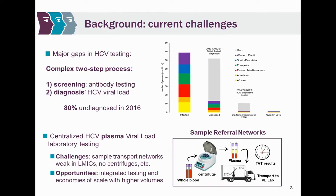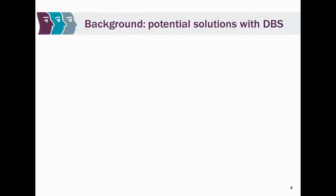Unfortunately, the gold standard to determine viremia relies on plasma, usually in centralized labs. There are many problematic issues, including sample referral networks — especially in low- and middle-income countries — where cold chain is required to transport plasma samples, and centrifuges are needed to get the plasma. Over the last decades, however, there has been significant laboratory strengthening in many countries, and nucleic acid testing platforms already in place for other diseases offer a good opportunity for integration across different diseases.